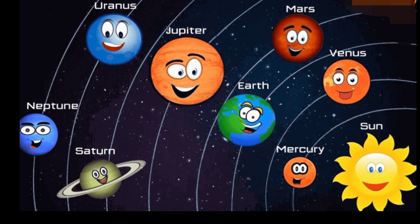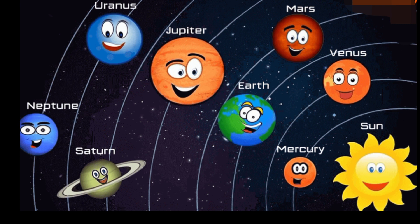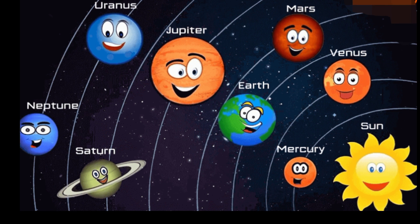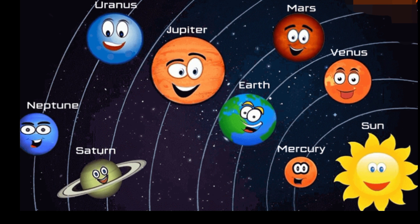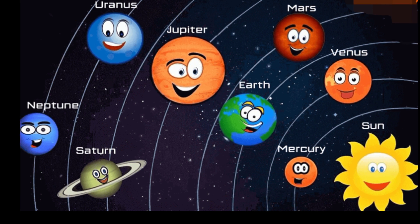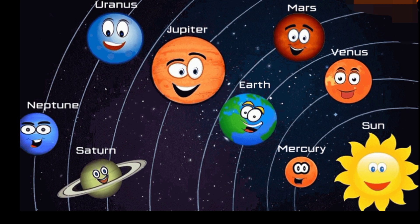Neptune, the 8th and most distant major planet orbiting our Sun, is dark, cold, and whipped by supersonic winds. It was the first planet located through mathematical calculations.